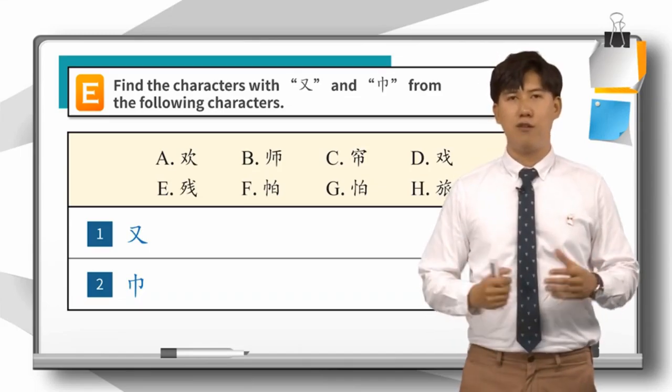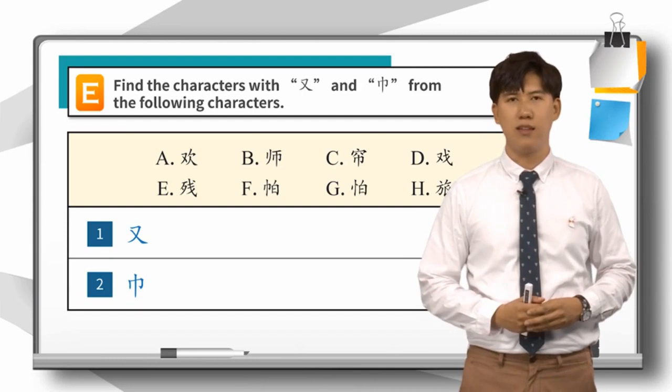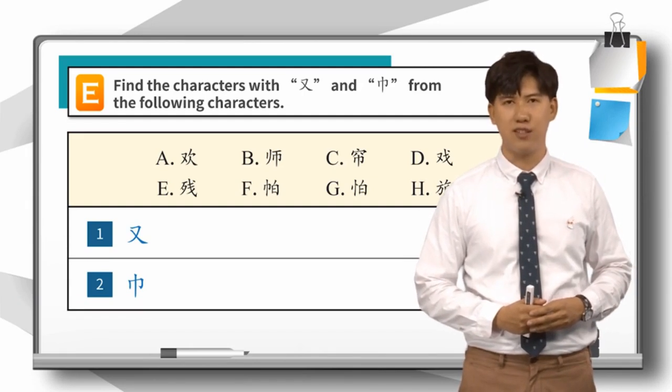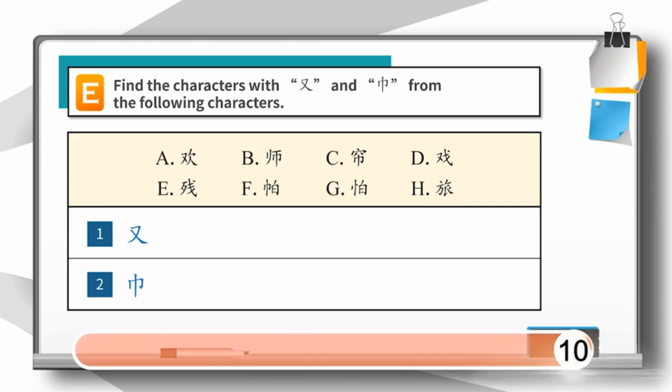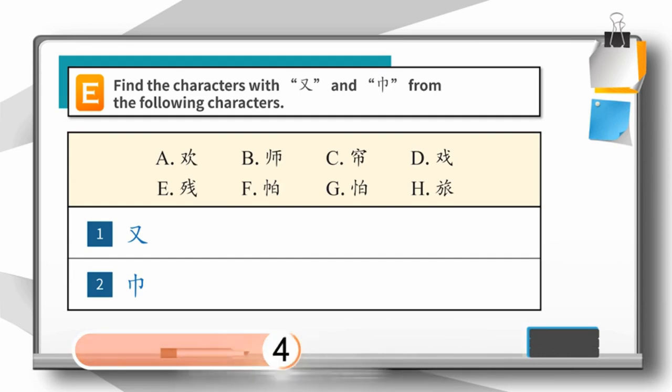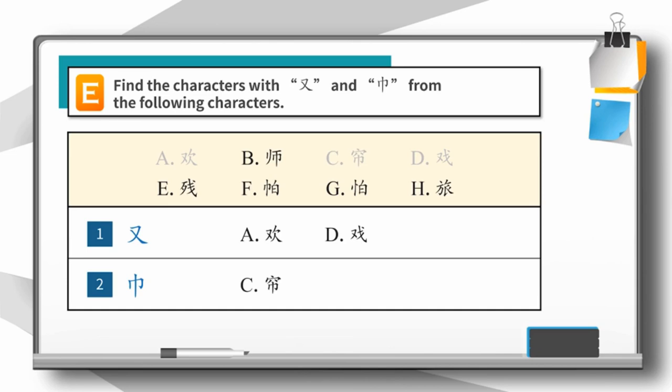Now challenge time! Find the characters with 右字旁 and 巾字旁 from the following characters. Let's check the answers. 右字旁: A, 欢; D, 细. 巾字旁: C, 连; F, 怕. 很好.